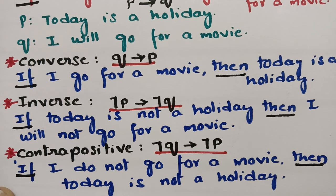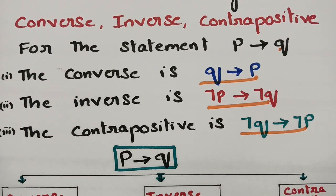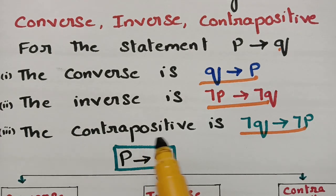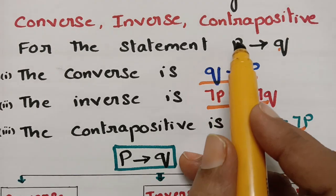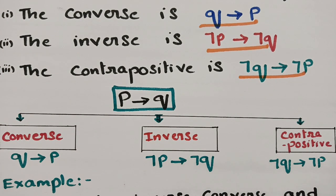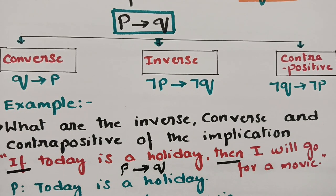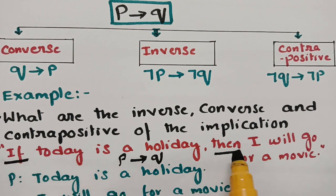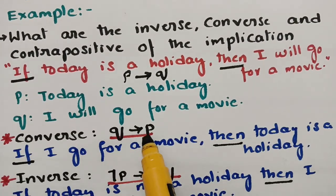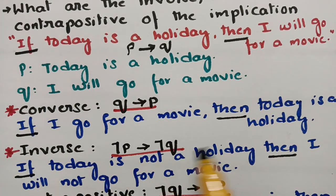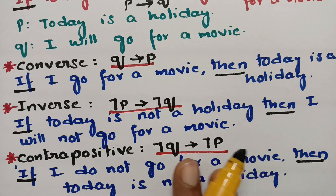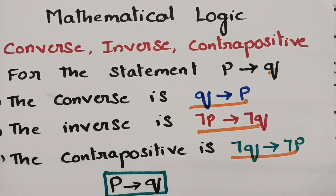Hope you all understand. This is an easy way to learn converse, inverse, and contrapositive. For P implies Q: converse is Q implies P; contrapositive is negation Q implies negation P; inverse is negation P implies negation Q. These are the formulae to remember so you can attempt any related question easily. They will give you statements — pull out P and Q, then apply the formulae. If you really understand, please pass it on to your friends. Learn more and grow more. Thank you so much.